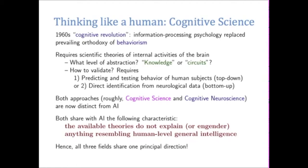This approach required scientific theories of the internal activities of the brain. But what level of abstraction should they be? Knowledge like thoughts or concepts, or at the level of circuits? Do we model brains at the neuron level or at the idea level? Another problem is how to validate — either through a top-down model that predicts human behavior, or a bottom-up approach using electrodes and brain scans to identify processes from neurological data. The top-down approach is roughly cognitive science, and the bottom-up is cognitive neuroscience, and both are now distinct from AI, though at the edges, especially between cognitive science and AI, the borders are a little fuzzy.